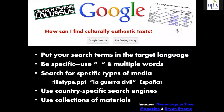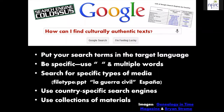So how do we find those kinds of culturally authentic texts? We're going to put our search terms in the target language. If we want more specific results, we'll put phrases in quotation marks because that tells the search engine to look for that specific phrase. We might search for specific types of media, use country-specific search engines, and look through collections of materials — and there is information about this in your packet.